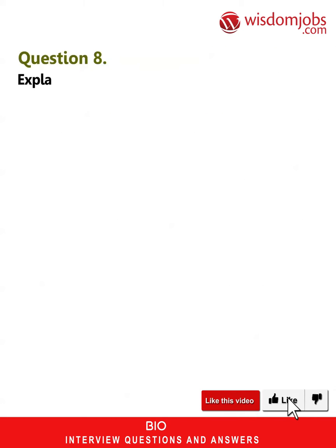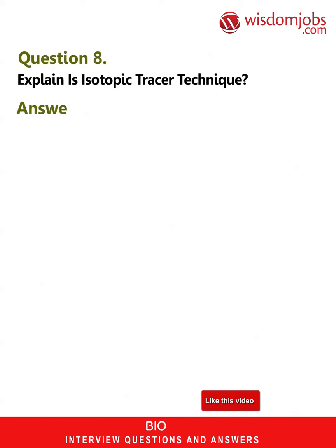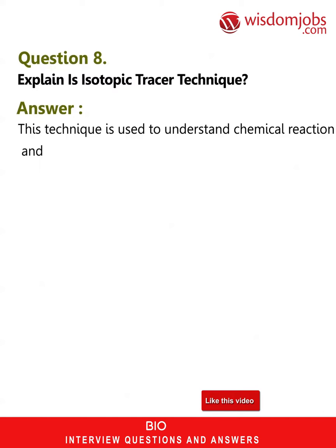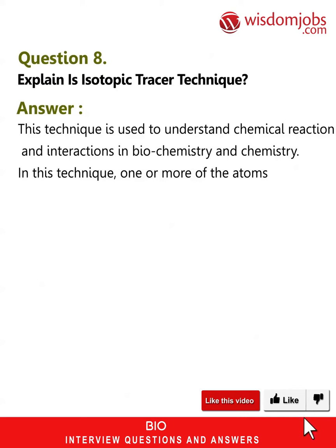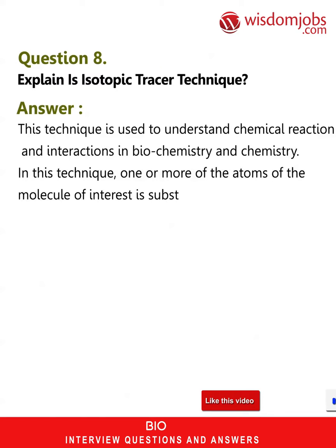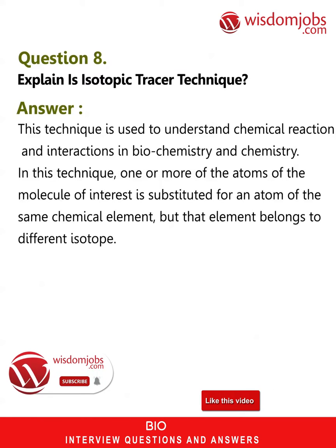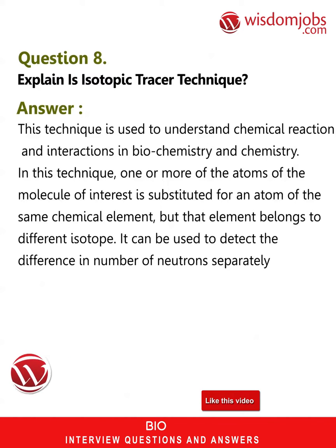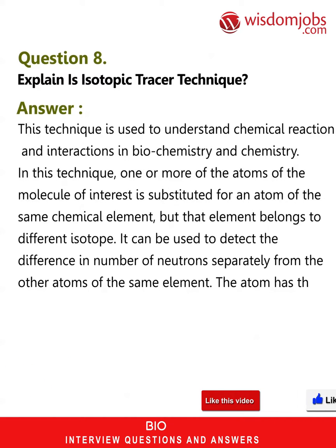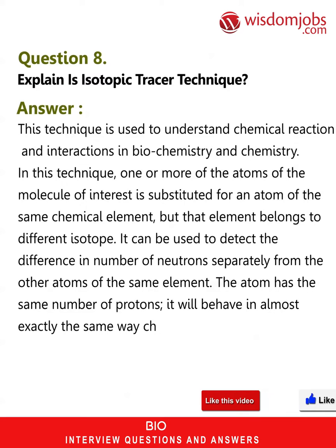Question 8: Explain the isotopic tracer technique. Answer: This technique is used to understand chemical reactions and interactions in biochemistry and chemistry. In this technique, one or more of the atoms of the molecule of interest is substituted for an atom of the same chemical element but belonging to a different isotope. It can be used to detect the difference in number of neutrons separately from other atoms of the same element. The atom has the same number of protons and will behave in almost exactly the same way chemically.